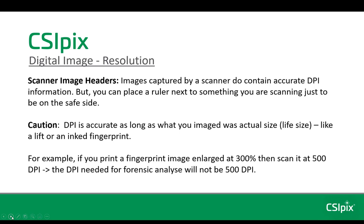I have seen images from scanners where the DPI information was corrupted, and also where it has been removed. So if you do have a ruler in your image, you can always get back to the actual DPI. A word of caution: DPI is accurate as long as what you image is actual size — life size, like a lift or an inked fingerprint. For example, if you print a fingerprint image enlarged at 300% and then scan it at 500 DPI, the DPI needed for forensic analysis of that scanned image will not be 500 DPI — it'll be 1500 DPI.